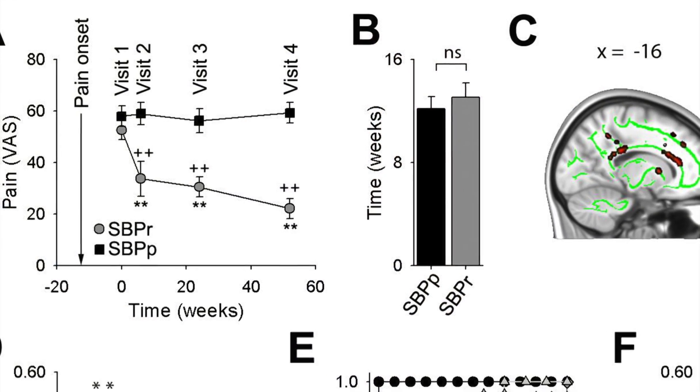What parameters specifically define the transition from acute to chronic pain has been a question in the field for the last 50 years. When you follow a group of patients who all start with an acute back pain episode — all equated at the beginning for the amount of pain, duration, intensity, and equal in anxiety and depression across a whole spectrum of characteristics — and follow them over a year...